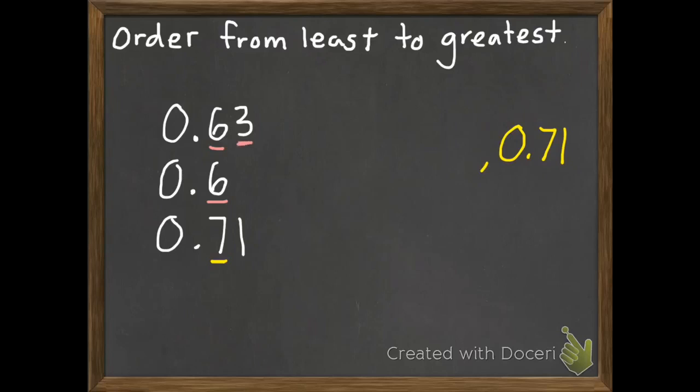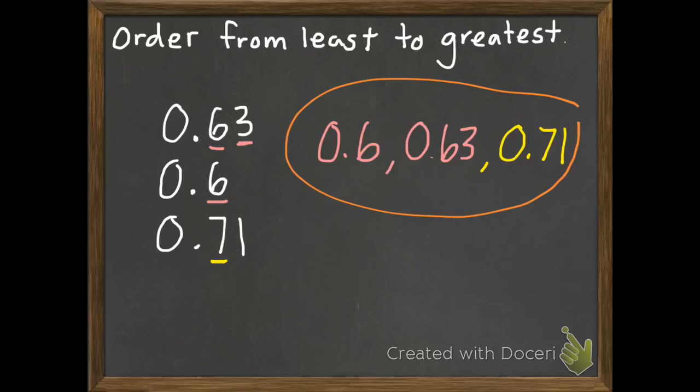So we need to move over one more place value. So this one has 6 tenths plus 3 hundredths. So it has just a little bit more. So that one's going to be in the middle, which leaves us just with the 6 tenths that's going to be our least. And there's our answer.